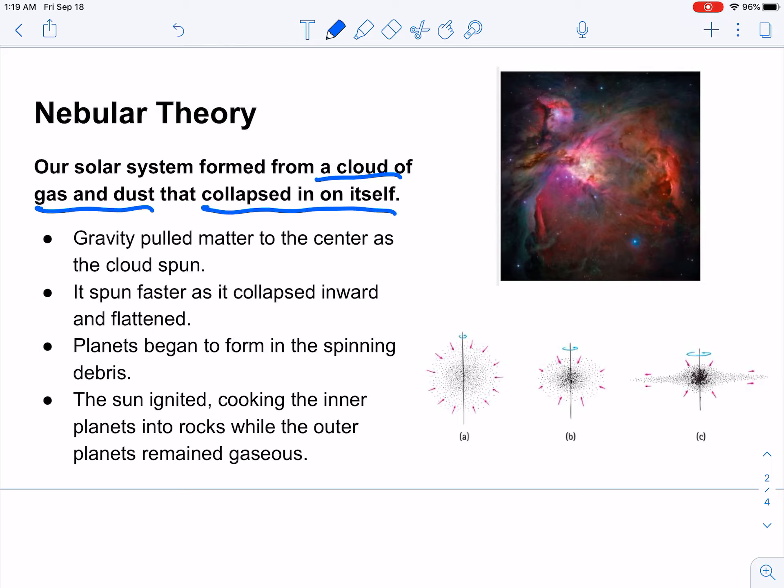So there you ended up with these sort of waves, but that becomes an interesting thing. So keep that in mind. Gravity pulled matter towards the center, cloud began to spin. As it spun faster, as it collapsed inwards on itself, it gets faster and faster as things get closer and closer together. That's what's pictured here.